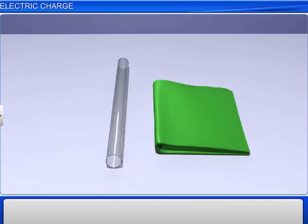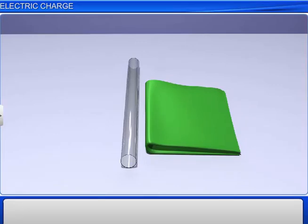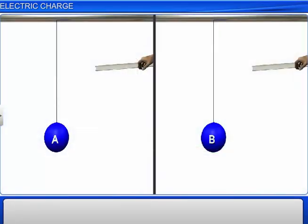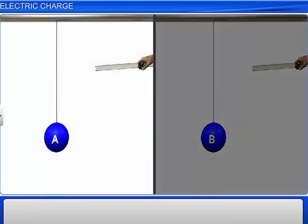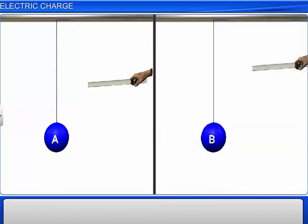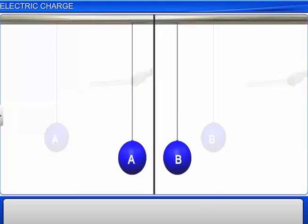Now, bring one charged glass rod in contact with a pith ball and then separate them. When these pith balls are kept close to each other without contact, we observe that they repel each other.